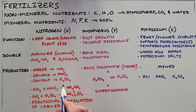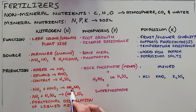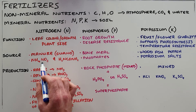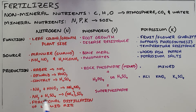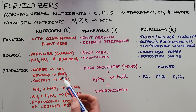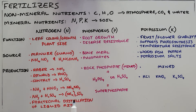If we combine ammonia with nitric acid we form ammonium nitrate, which is one of the main sources of nitrogen for plants. If we combine ammonia with sulfuric acid we form ammonium sulfate, which is also a very good source of nitrogen for plants.